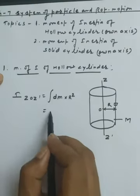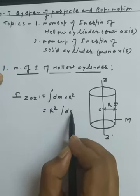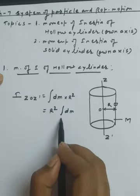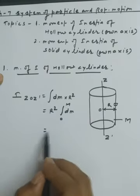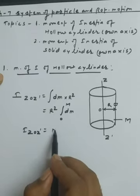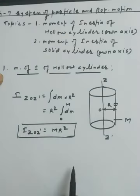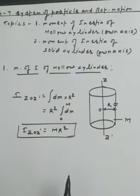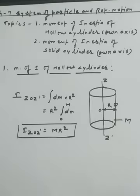We integrate dm from zero to M, covering the whole mass. Since all mass is at the same radius R, integrating gives us the moment of inertia I = MR². This is the moment of inertia of the hollow cylinder. The hollow cylinder definitely has more moment of inertia compared to the solid cylinder, as we will see when we compare the results.